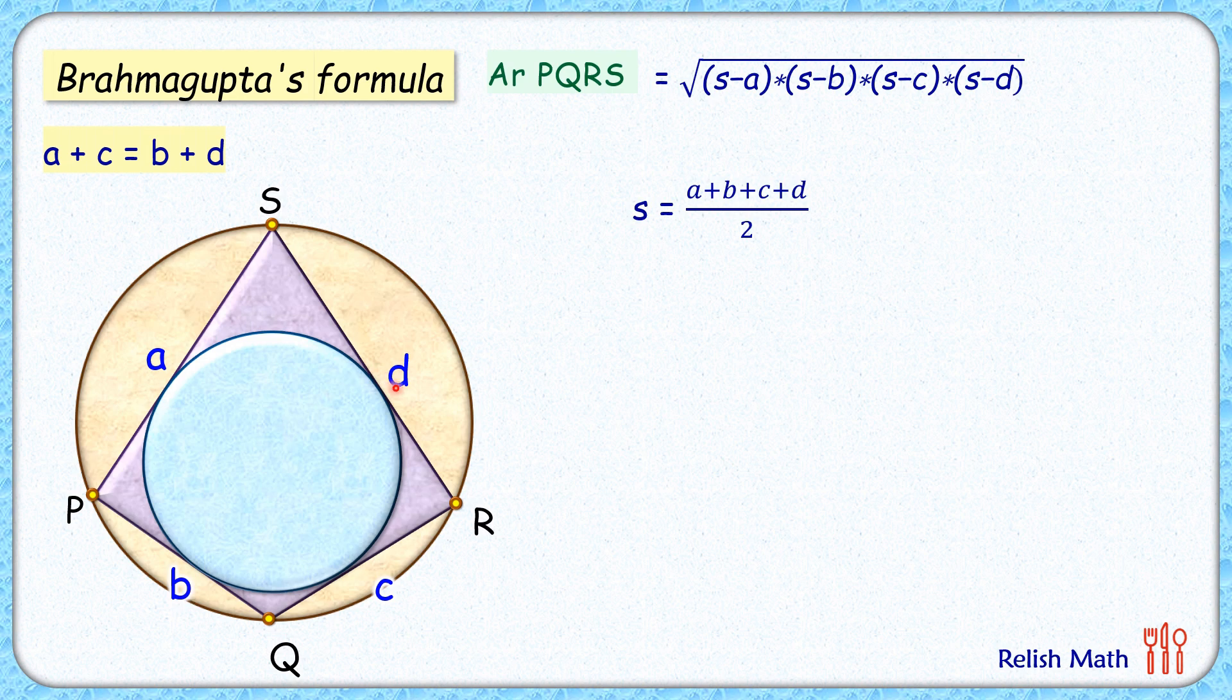So in this semi-perimeter formula, let's replace b+d with a+c. The numerator will be 2(a+c), and the semi-perimeter will be a+c. Also, if we replace a+c with b+d, we get that the semi-perimeter also equals b+d.